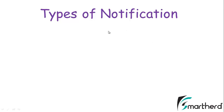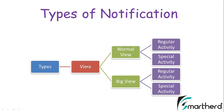What are the types of notification? Based on the view, the notification is broadly categorized into normal view and big view. These two views are further categorized into regular activity and special activity. Similarly, the big view is also categorized into regular activity and special activity.